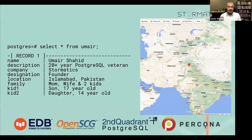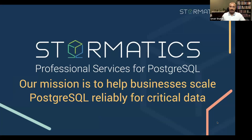I'm talking to you from Islamabad. Over the past 20-odd years, I've been with EDB, OpenSCG, Second Quadrant, and Percona — all pure-play Postgres companies. Currently, I'm running Stramatics, which is also an EDB partner, with a mission to help businesses scale Postgres reliably for critical data. The key word here is critical data.